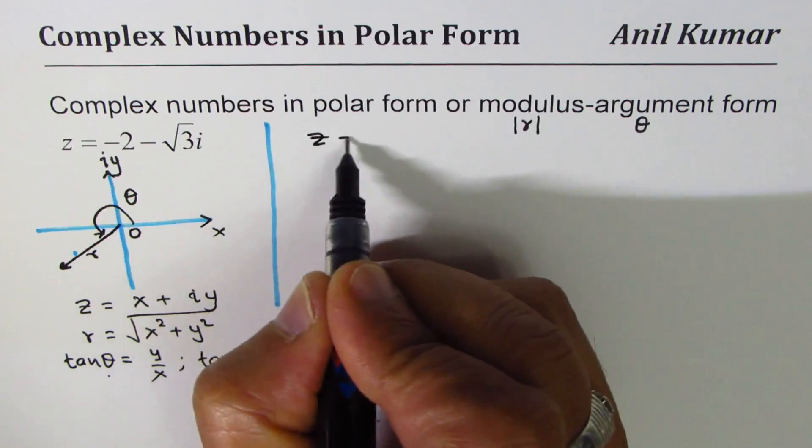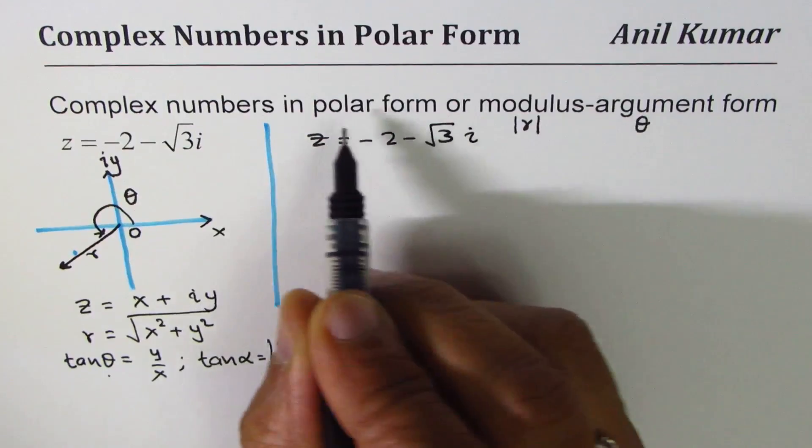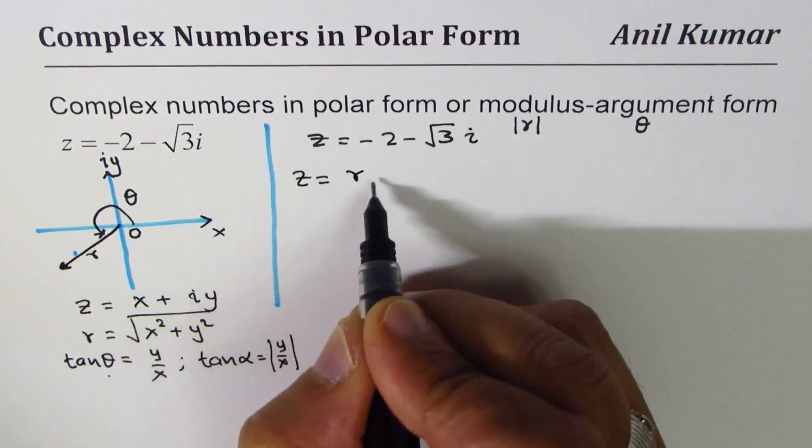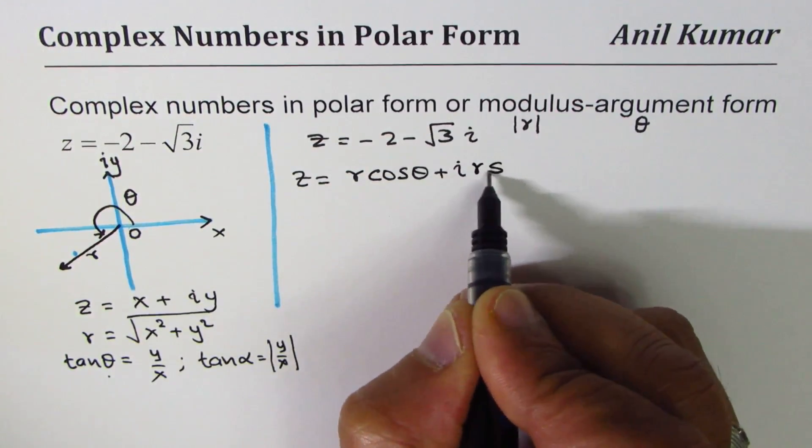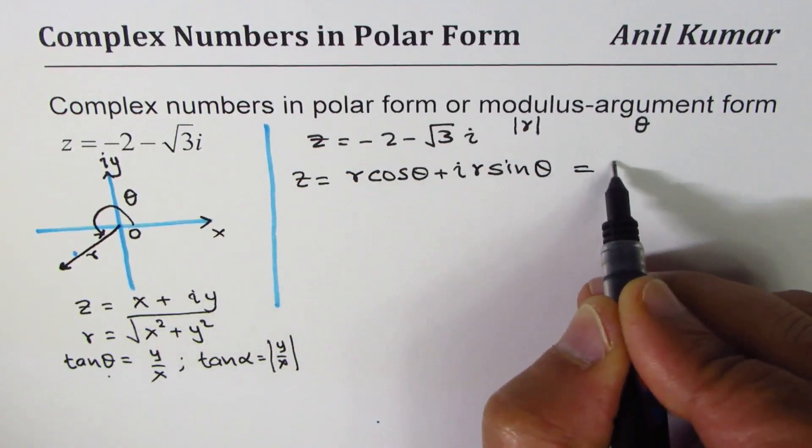So that is a strategy to work with. Let's begin. We need to write the complex number z = -2 - √3i in polar form, that is to say as r cos θ + ir sin θ.